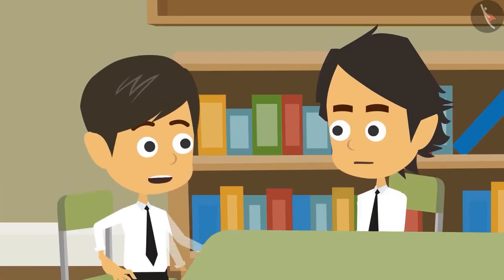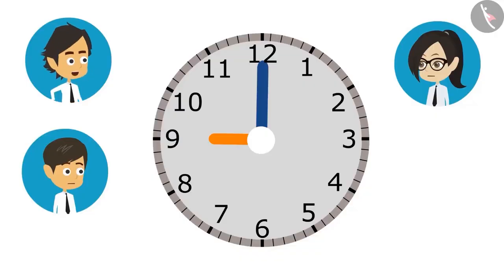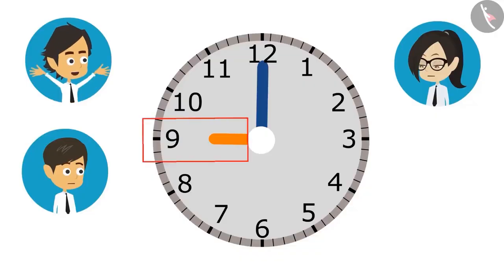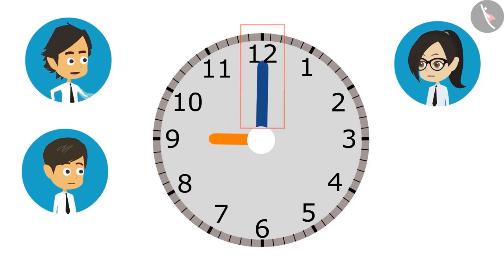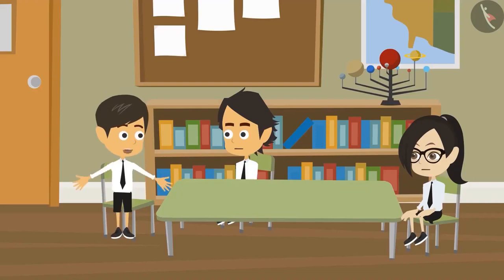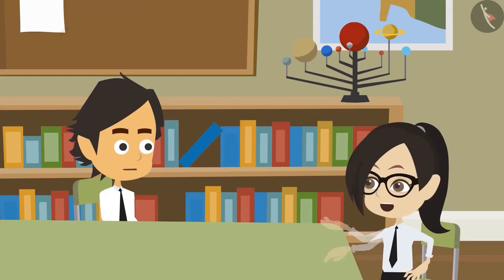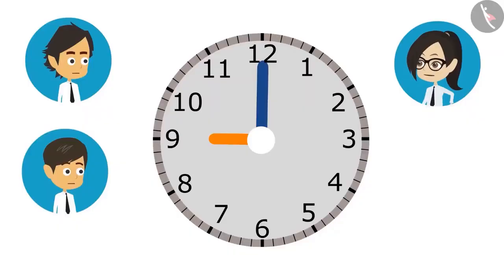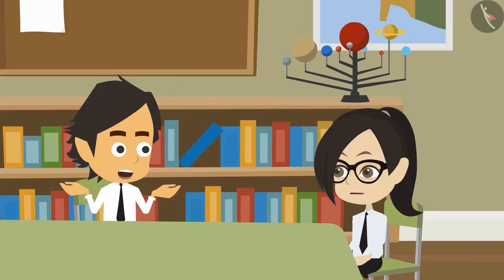Vandana explains to Ayushman: if the minute hand is at 12 when you start from home, does that mean the time is 12 minutes past 9 o'clock? That cannot be right, because then you would arrive before you left. The numbers written on the clock show the hours, not the minutes. It is very easy to read minutes — the minute hand takes 5 minutes to go from one number to another.